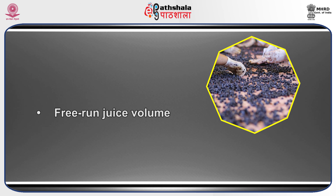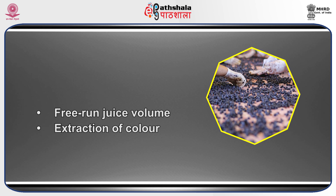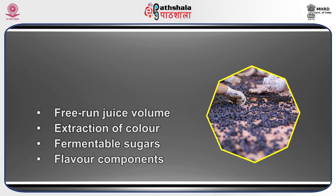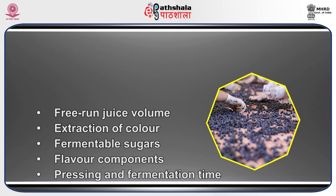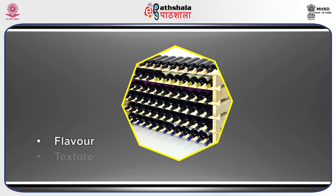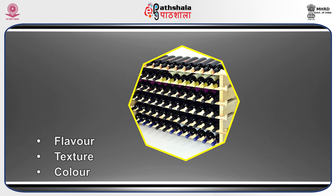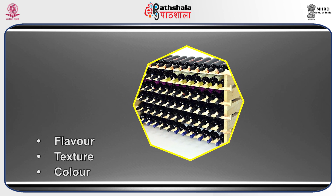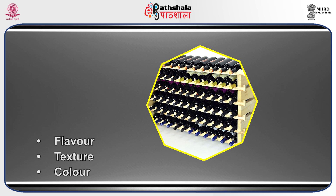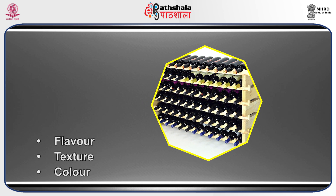Pectinase containing hemicellulase enzyme products are added to grapes or grape must to increase free-run juice volume and extraction of color, fermentable sugars, and flavor components, as well as to reduce pressing and fermentation time. These enzymes improve the flavor, texture, and color of finished wine. Beta-glucanase containing pectinase de-pectinizes grape must prior to fining and filtration during fermentation or in young wines.